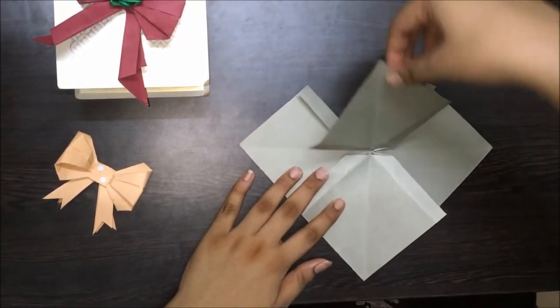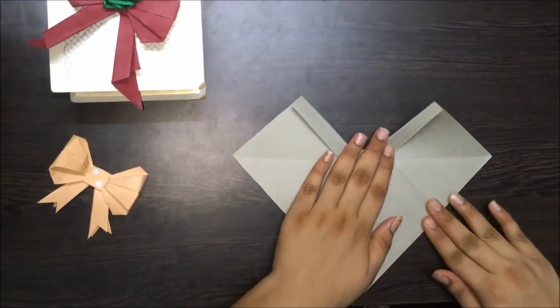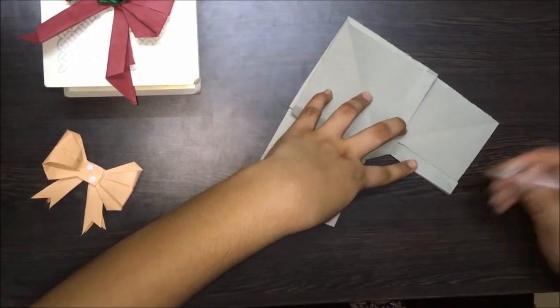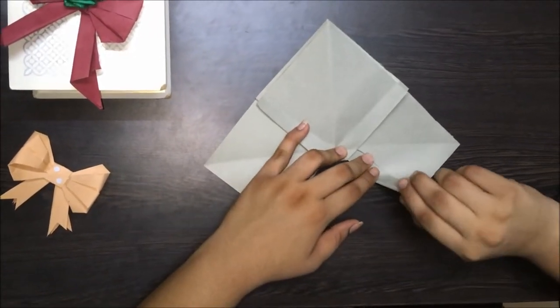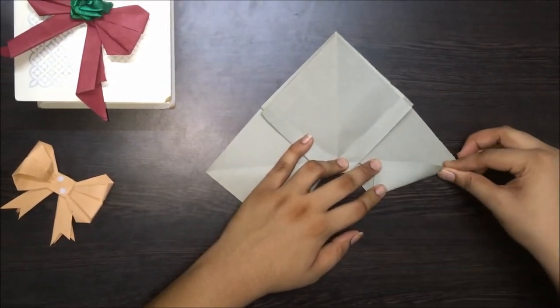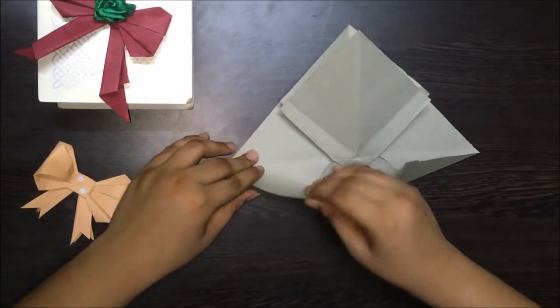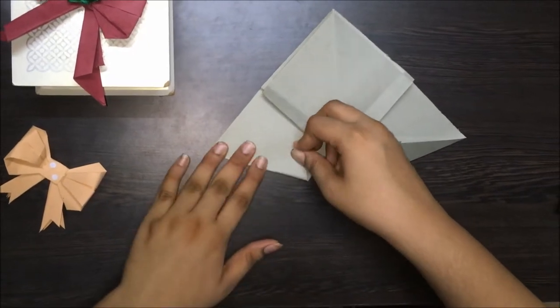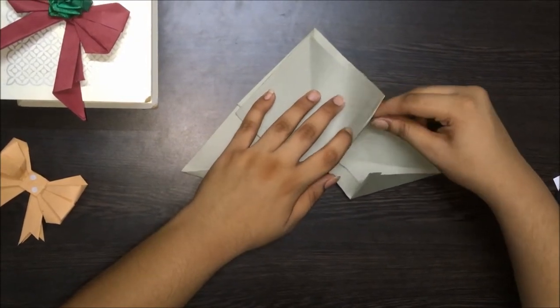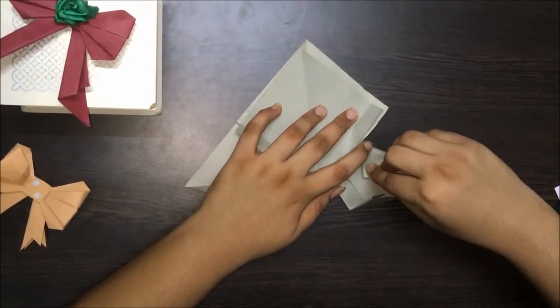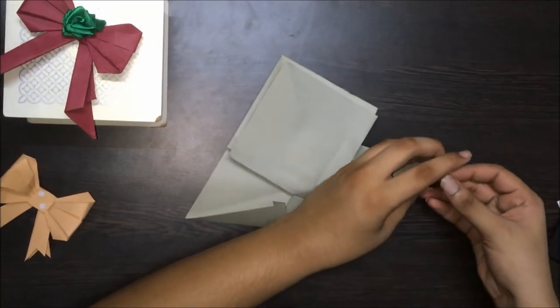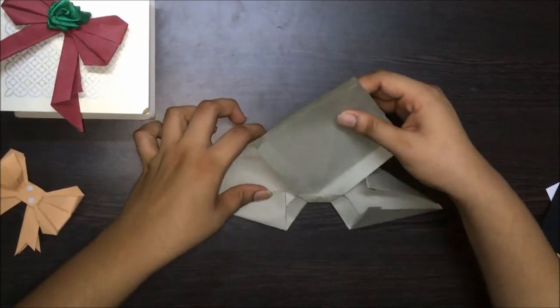Now pick this paper and fold it like this. Let's mark this point A and this point B. So let's pick corner B and fold it inwards. Do the same on the other side and make a crease. Do the same with corner A and make a crease. Do the same on the other side.